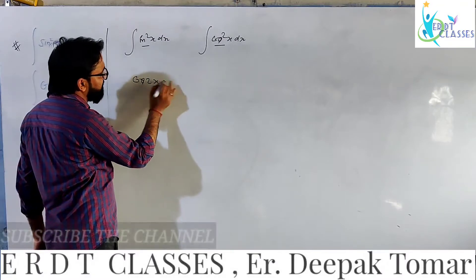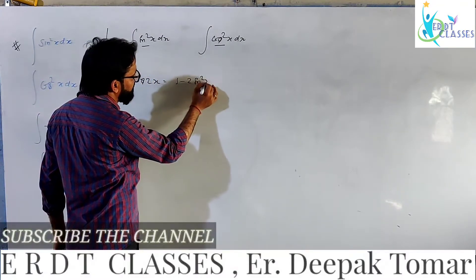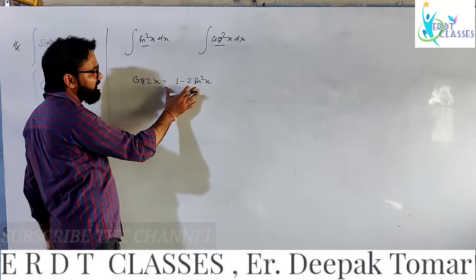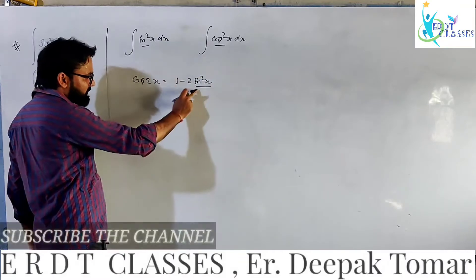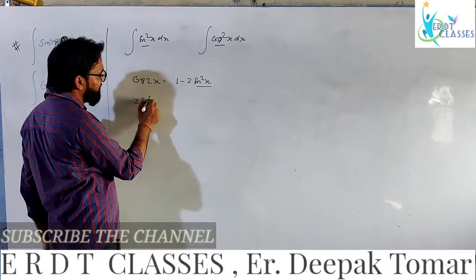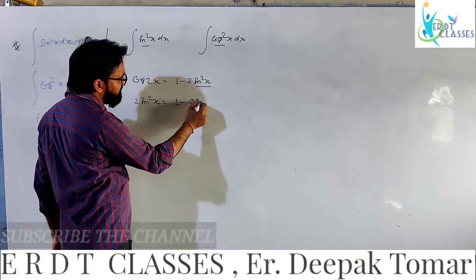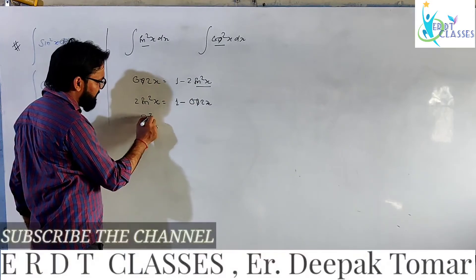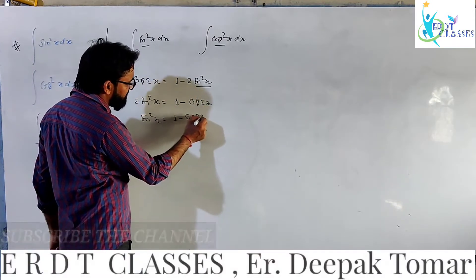Because we know cos 2x is equal to 1 minus 2 sin square x. So from this, we can write that 2 sin square x is equal to 1 minus cos 2x, which means sin square x is equal to (1 minus cos 2x) over 2.